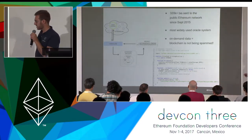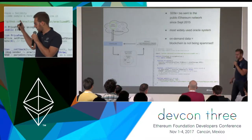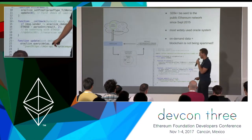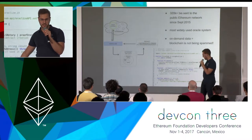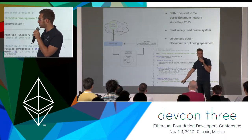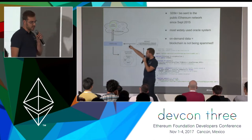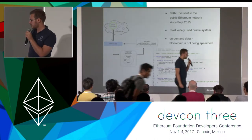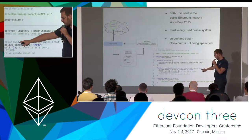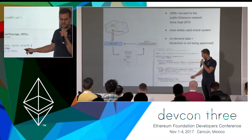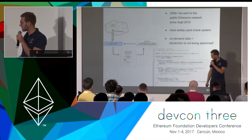Oraclize fetches it and sends back a new transaction. The first transaction is the one the user does, which maybe calls the update method and starts the call out to the Oraclize engine. The second transaction is when we send back the result and the authenticity proof to the calling contract — this typically calls the callback method. You see here you have a query ID, the result, and the proof, and then you do whatever your contract needs to do with the result that Oraclize has sent back.